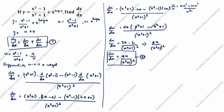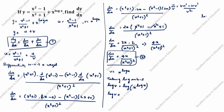Next we will find dv by dx. v is equal to x to the power log x. Taking log on both sides: log v is equal to log of x to the power log x. Using the formula log(x to the power n) equals n log x, we get log v equals log x times log x, which is (log x) squared.